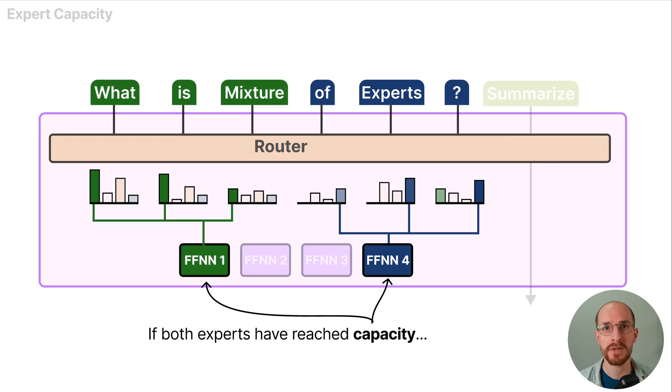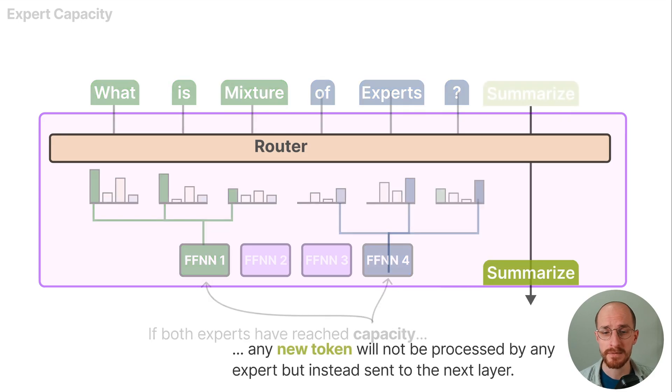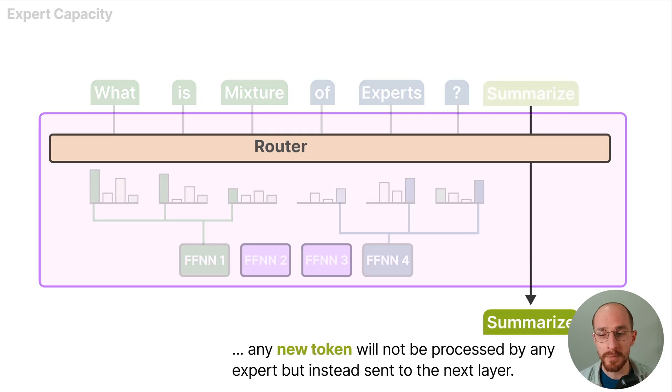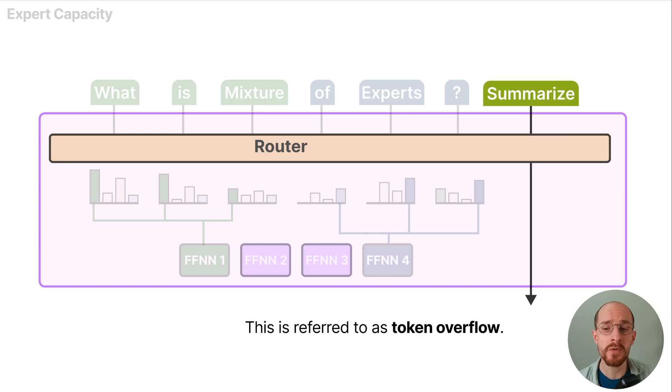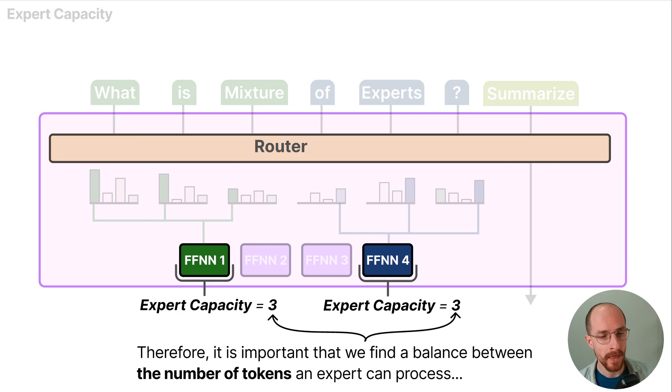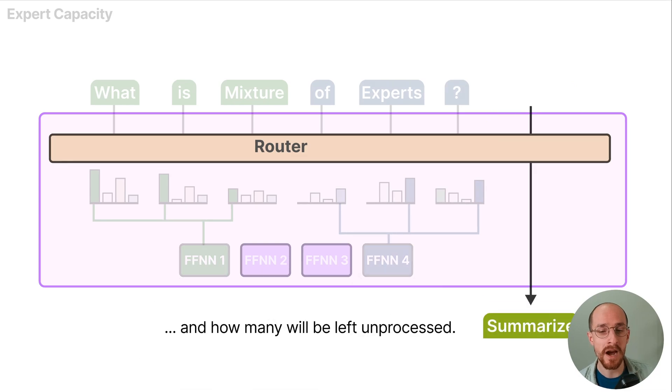If both experts have reached capacity any new token will not be processed by any expert but instead sent to the next layer. This is referred to as token overflow and therefore it is important that we find a balance between the number of tokens an expert can process and how many will be left unprocessed.